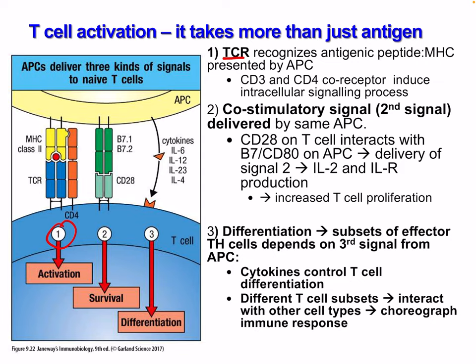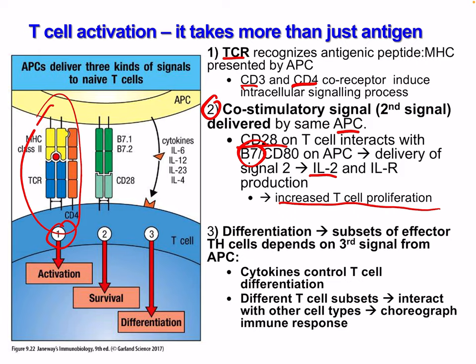T cell activation requires more than just antigen recognition. Signal 1: the T cell receptor recognizes the antigenic peptide-MHC presented by the APC, with CD3 and CD4 co-receptor inducing intracellular signaling. Signal 2: a co-stimulatory signal by the same APC — CD28 on the T cell interacts with B7, delivering the second signal causing IL-2 and IL-2 receptor production and increasing T cell proliferation and survival. Signal 3: differentiation — subsets of effector T cells depend on the third signal from cytokines released by the antigen-presenting cell, controlling T cell differentiation into different subsets.